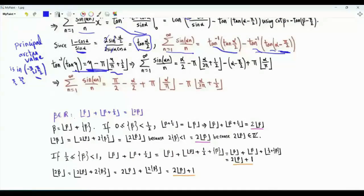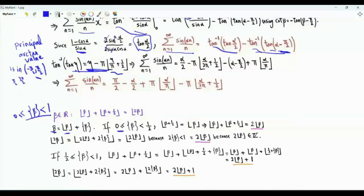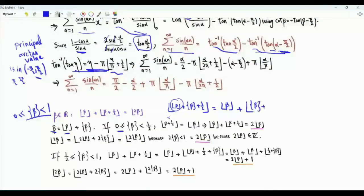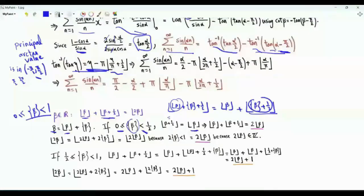A well-known result is that floor(β) + floor(β + 1/2) = floor(2β). Writing β as the sum of its floor and fractional part, if the fractional part is in [0, 1/2), then floor(β + 1/2) = floor(β), so floor(β) + floor(β + 1/2) = 2·floor(β). The floor of 2β is also 2·floor(β) in this case since 2 times the fractional part is less than 1.